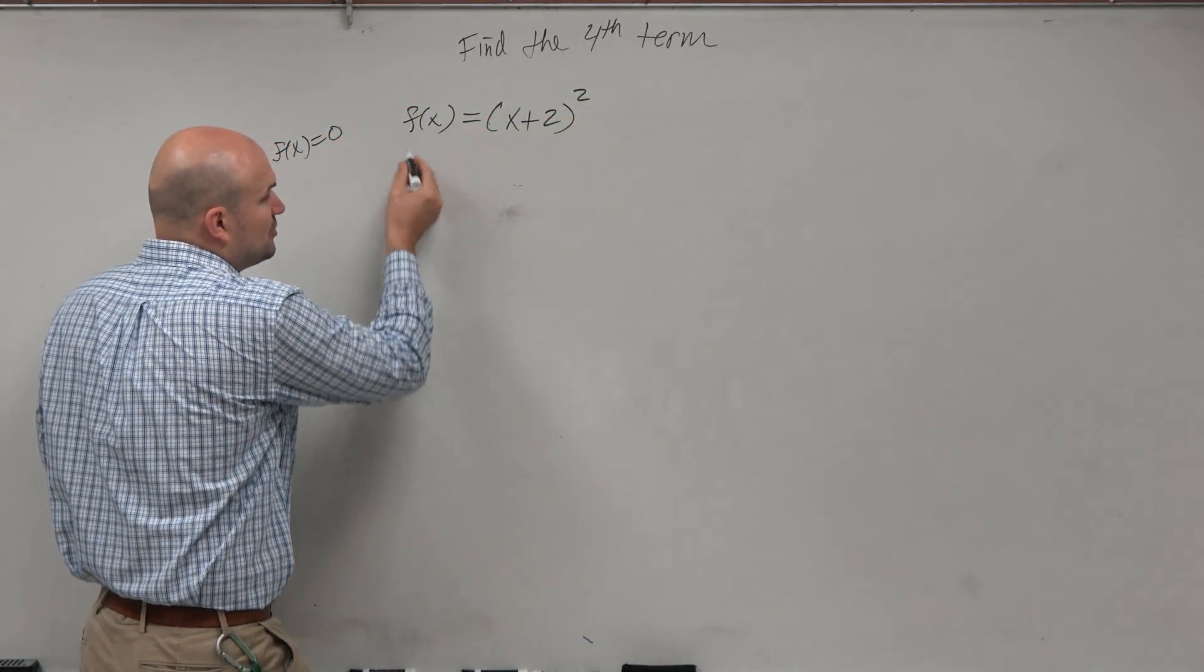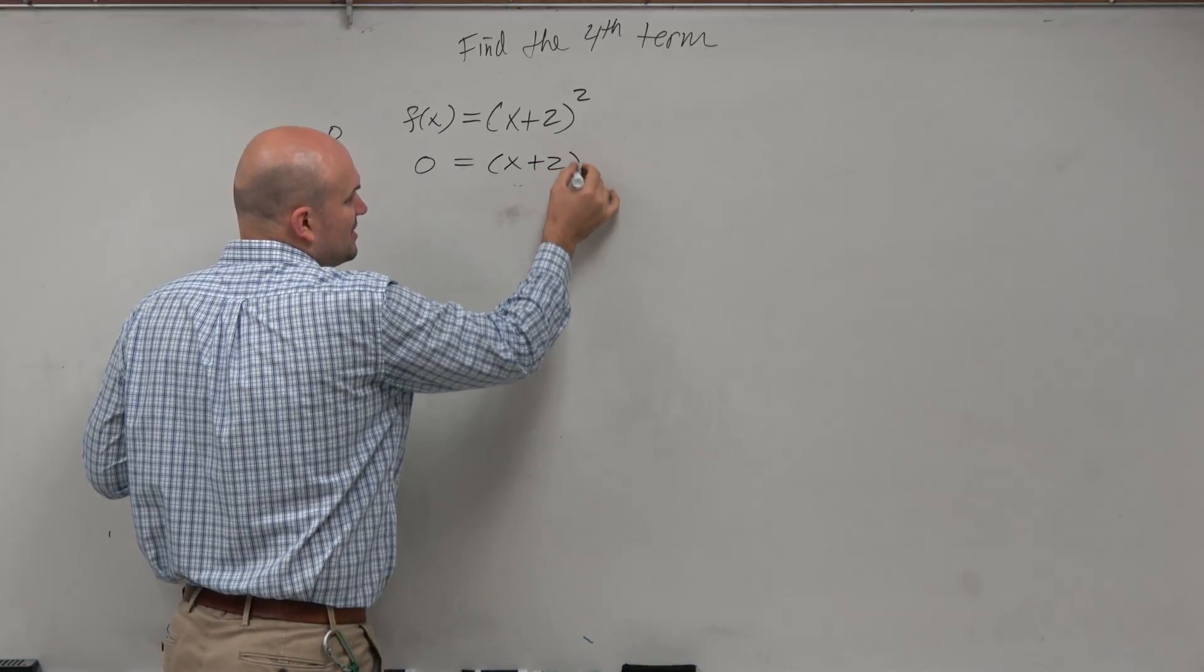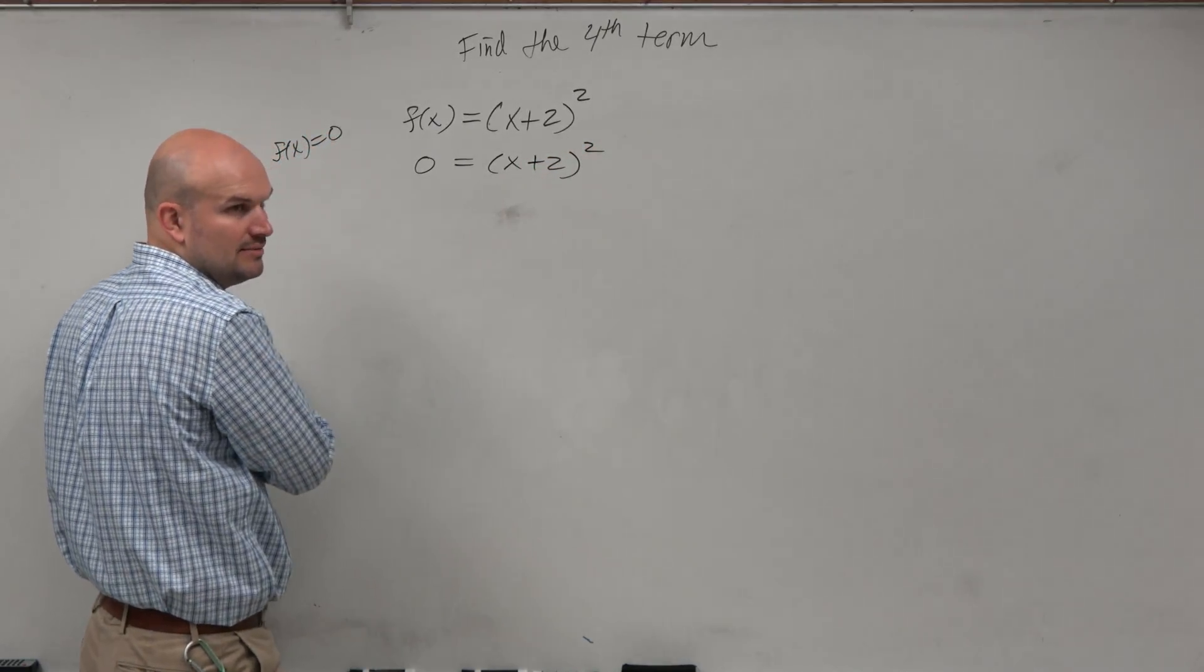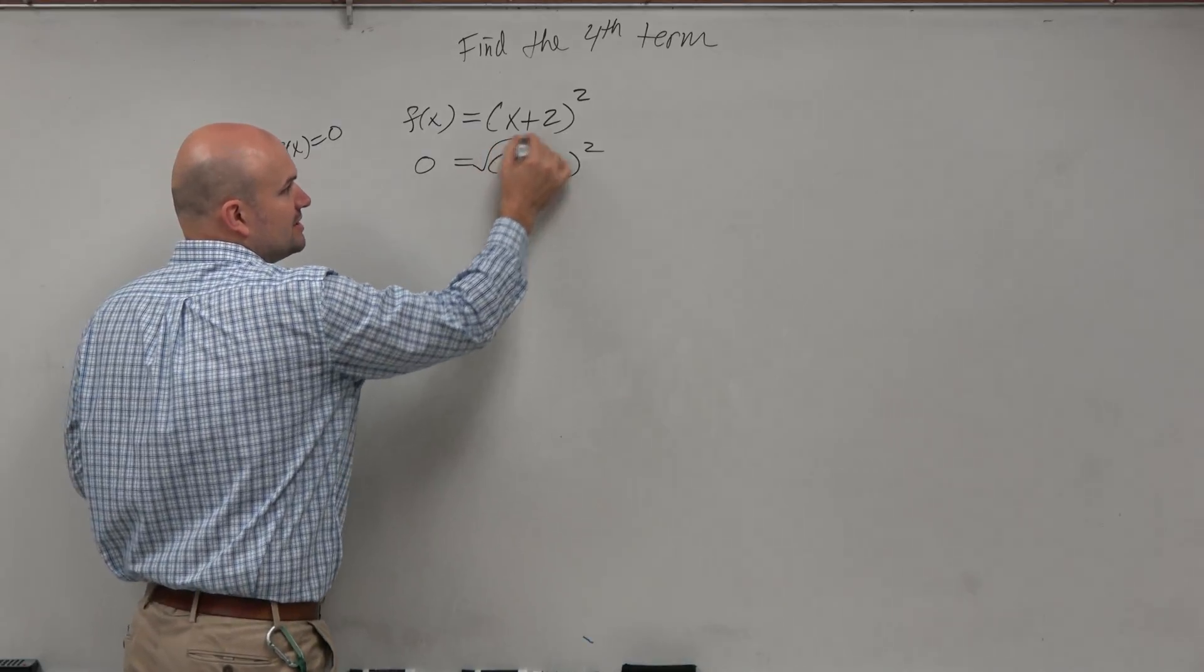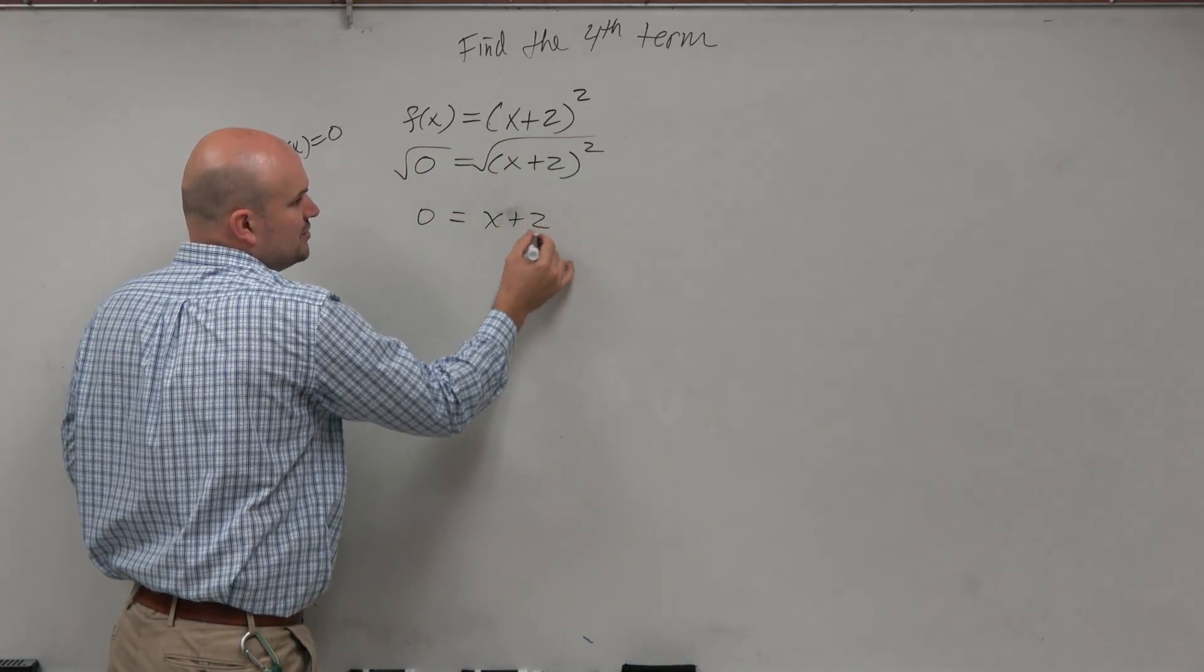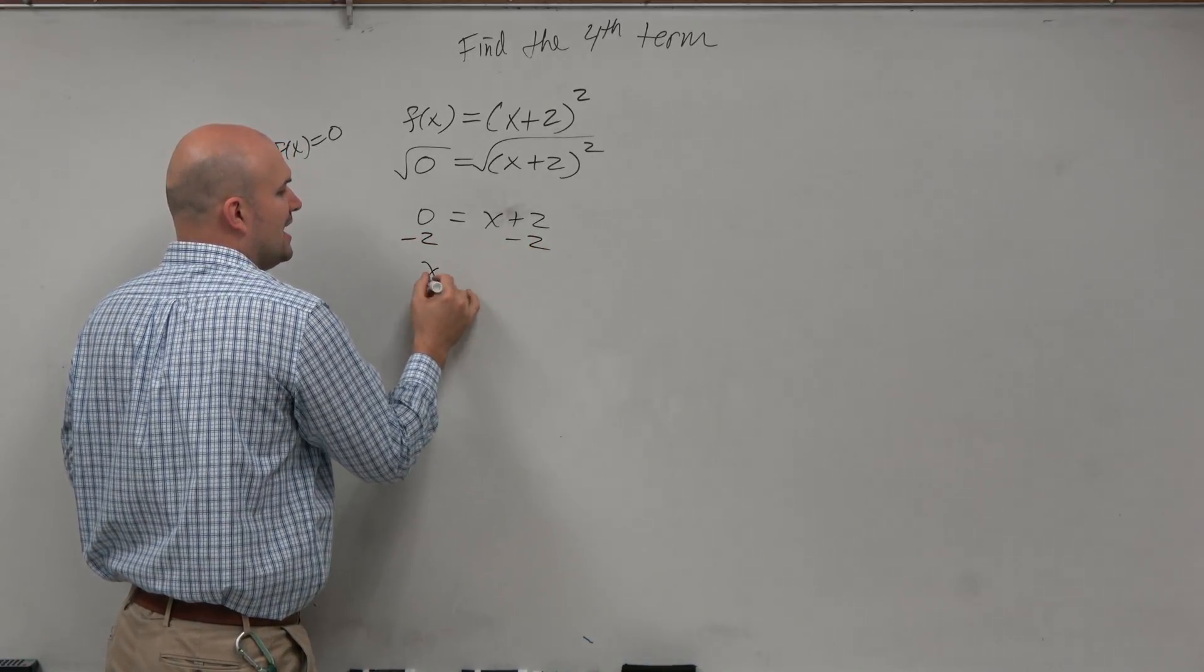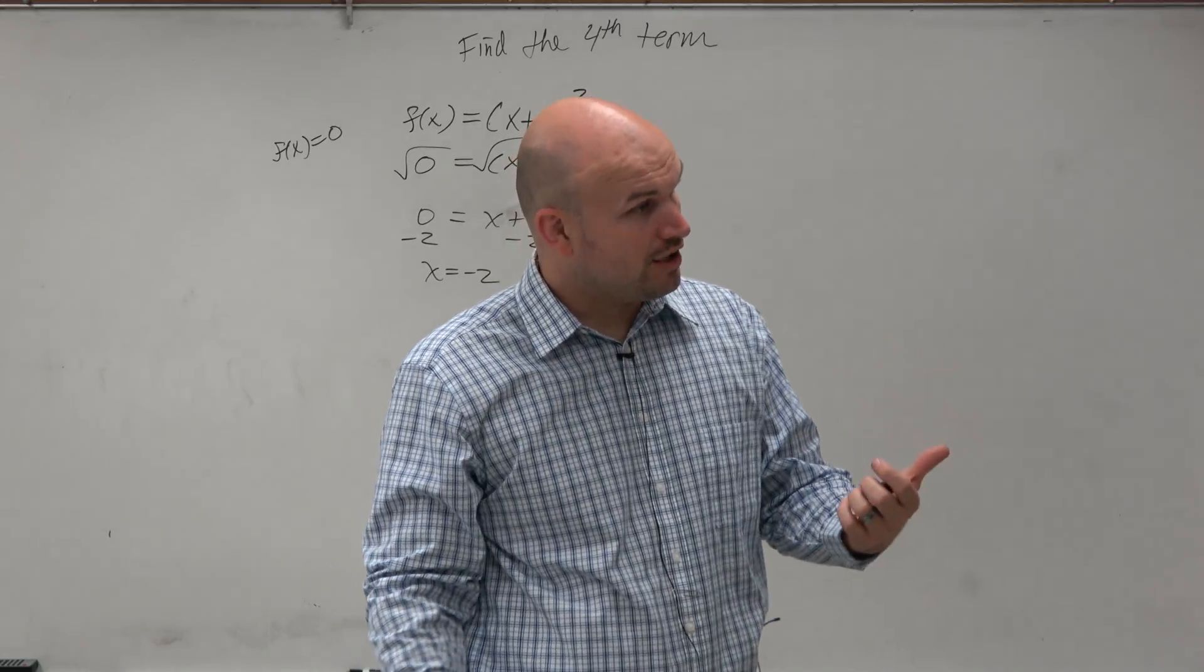So if we just replace f of x with 0, now we just need to solve this. And we did this last class period, so it's not like I'm introducing anything crazy to you. So we're going to square root both sides. We get 0 equals x plus 2. Subtract the 2. x is equal to negative 2 is the only real zero in here.